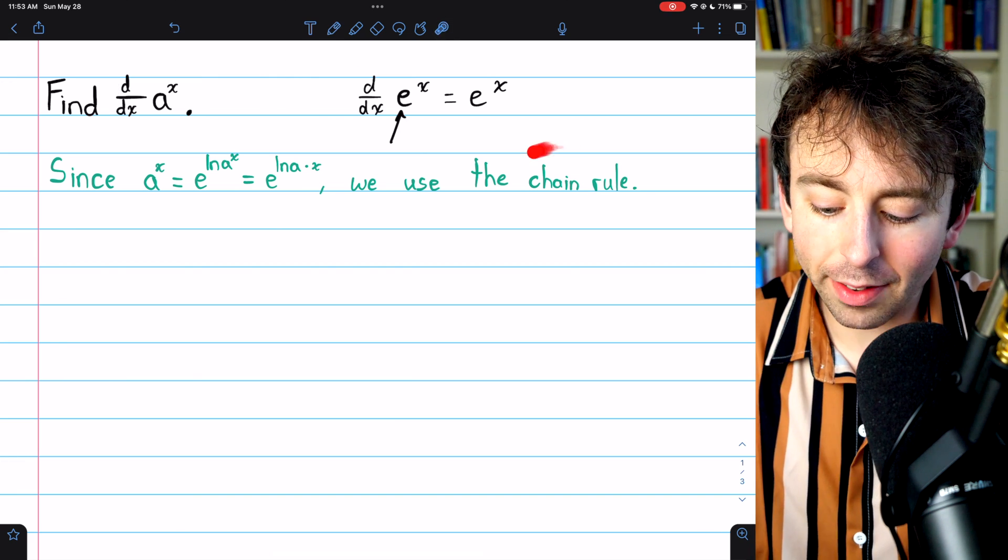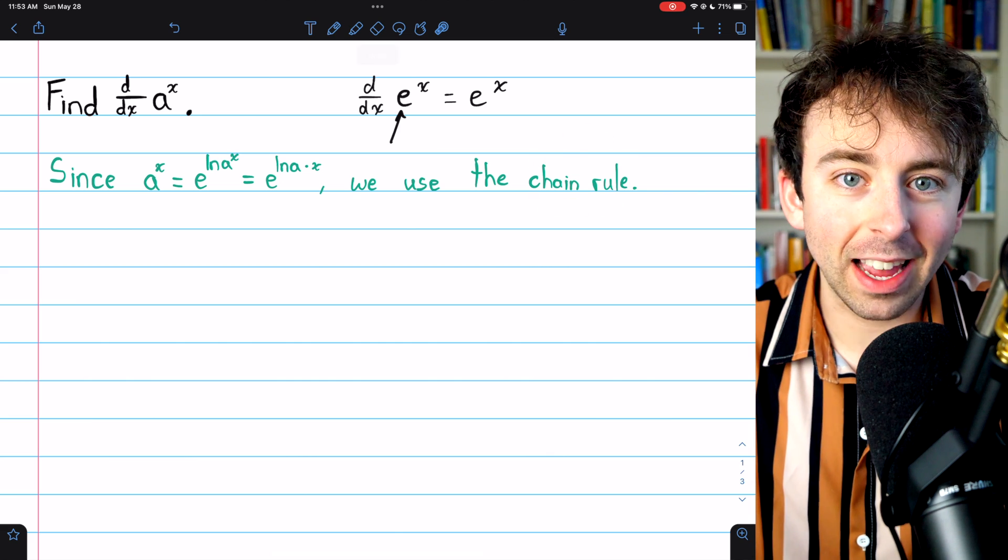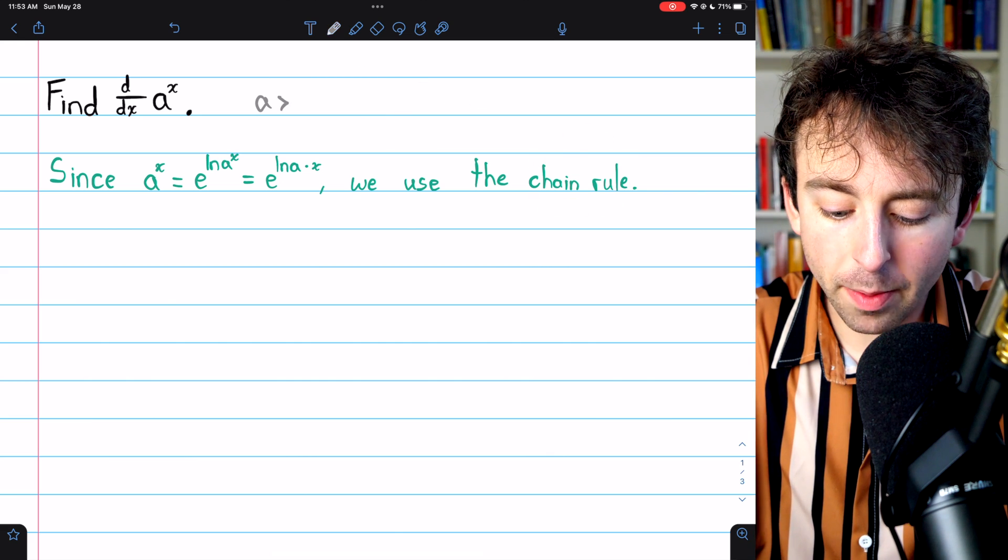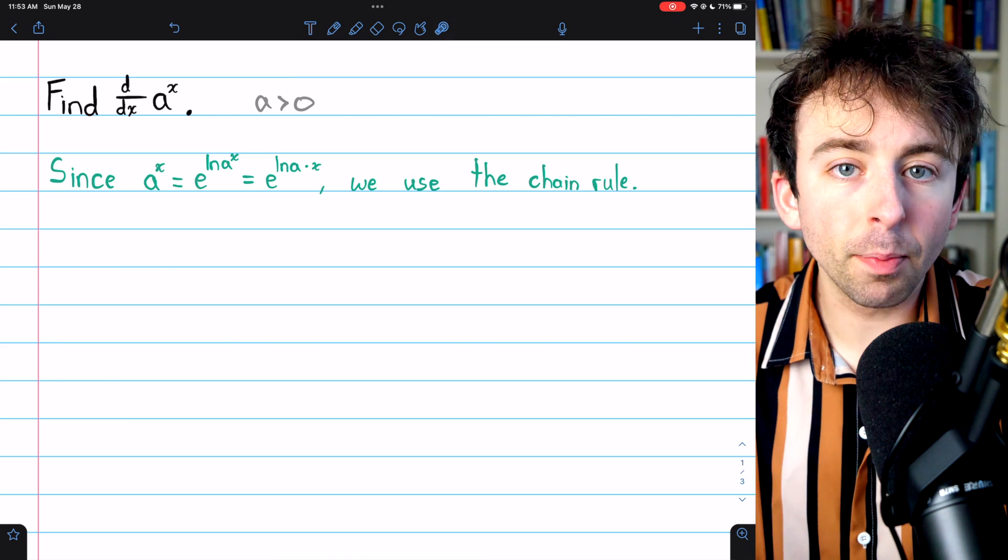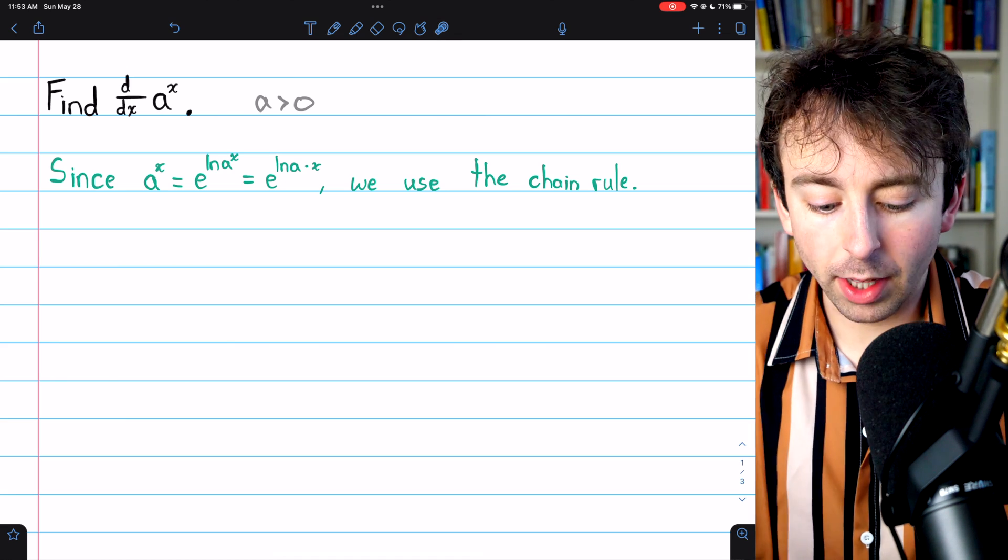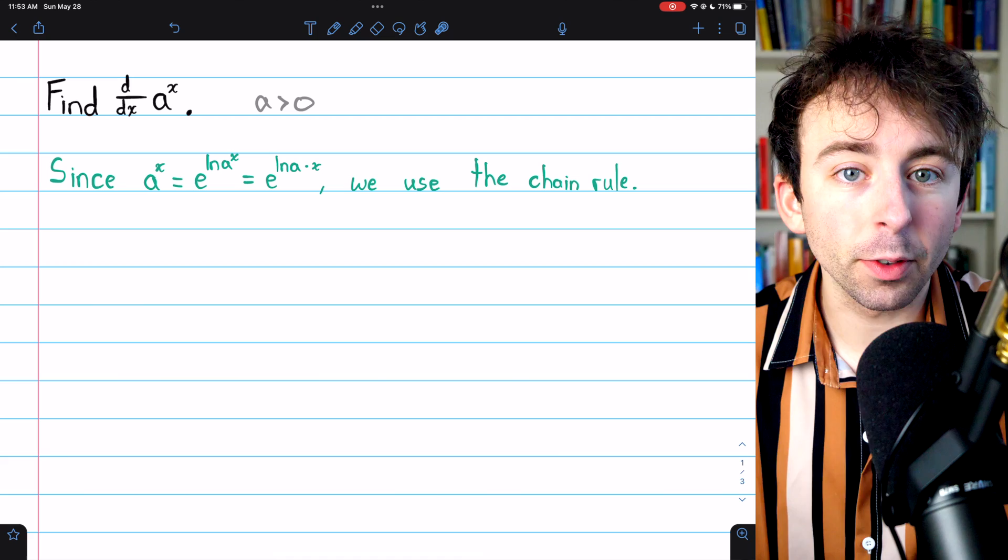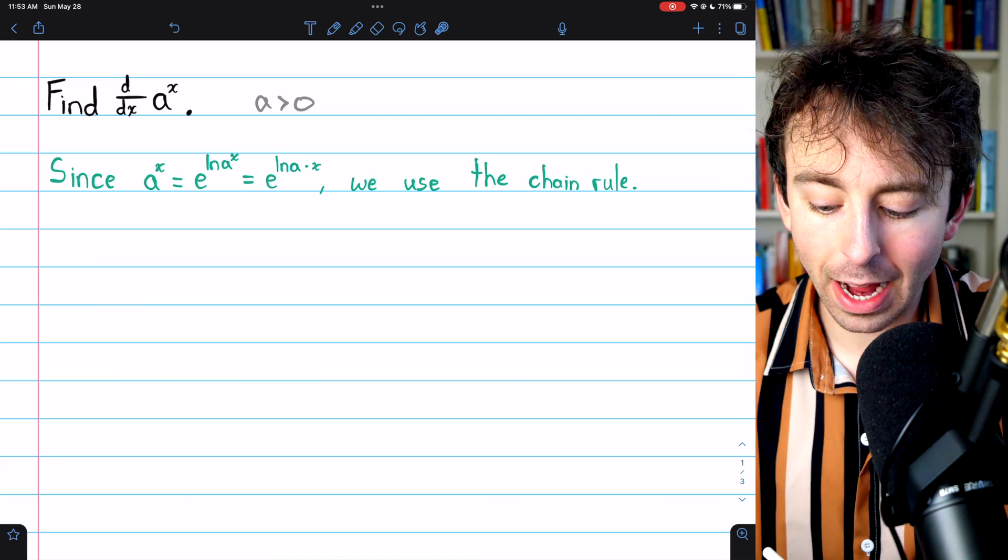Well, now that we've got the chain rule, we can figure this out. I'll just write here in gray to make sure we remember that a is positive. We're going to find the formula for the derivative of a to the x for any fixed positive number a.